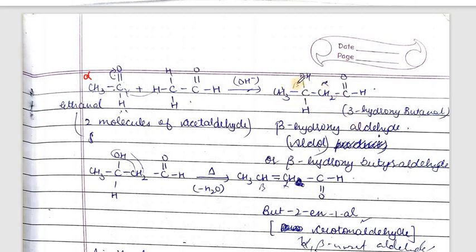The alpha carbon and beta carbon are identified, and the OH group is attached to the beta carbon. So it is a beta hydroxy carbonyl compound, or beta hydroxy aldehyde. The electrons move to form a bond, giving CH(OH)–CH₂–CHO, that is beta hydroxy aldehyde. The detailed mechanism can be seen further.